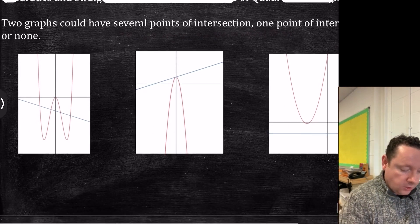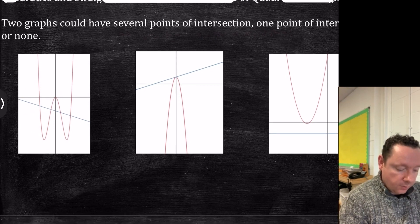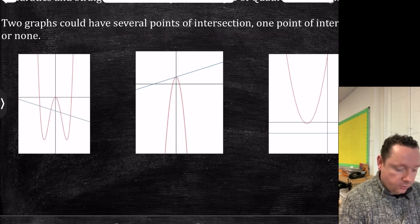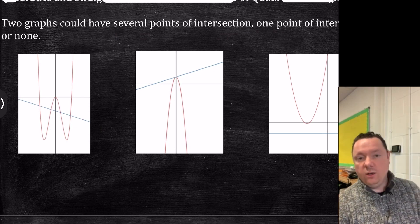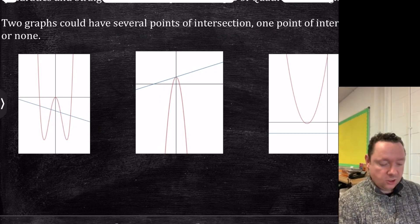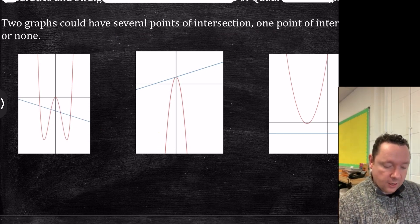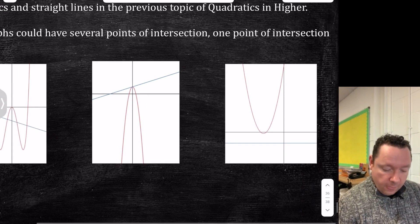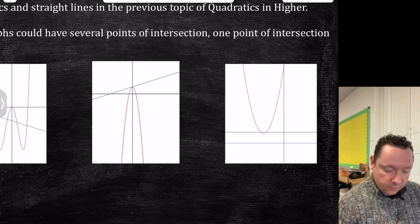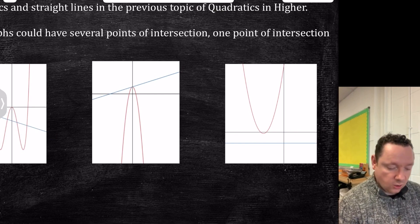So here's a couple of examples. Let's say we had this big random graph and we had a straight line going through it. You see it's cutting at one, two, three, and four places. Or we could have this quadratic graph and it's just a tangent touching at one point. Or we could have this sort of graph here where the line, this is just the x-axis, is not touching at all.